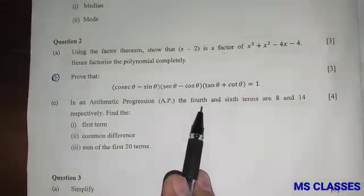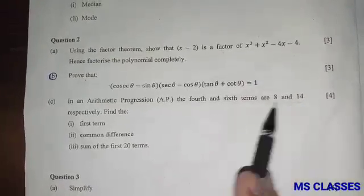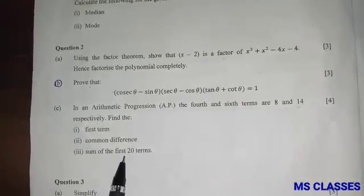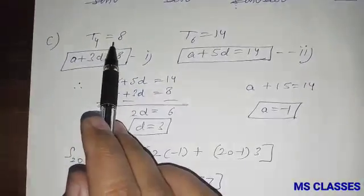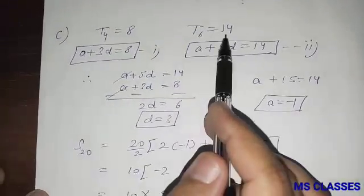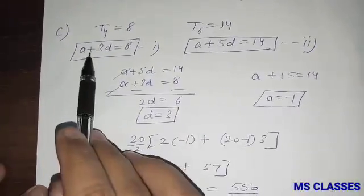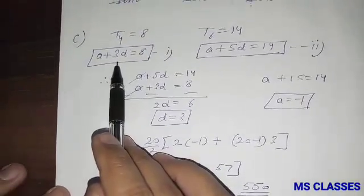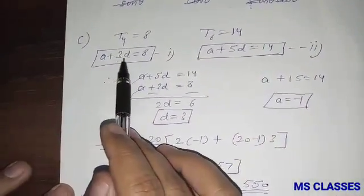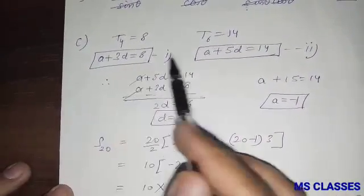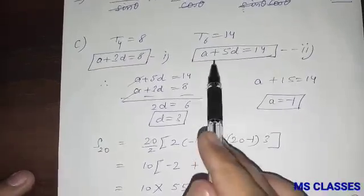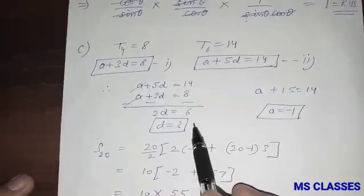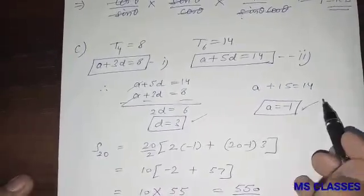In an arithmetic progression, the fourth term is 8 and the sixth term is 14. Using the nth term formula a + (n−1)d: we get a + 3d = 8 and a + 5d = 14. Solving these two equations simultaneously gives d = 3 and the first term a = −1.